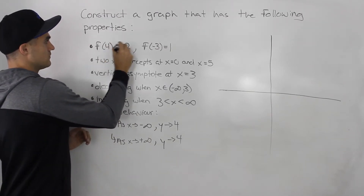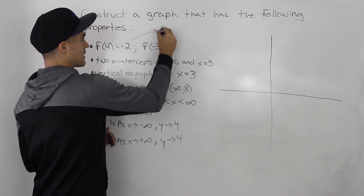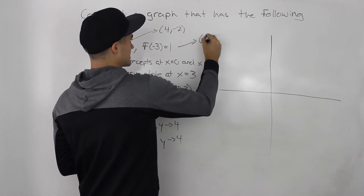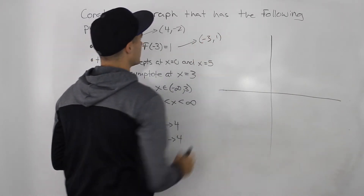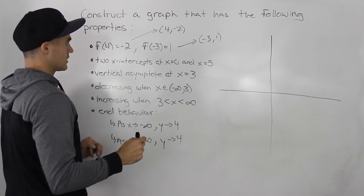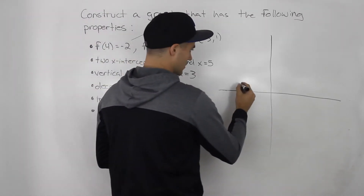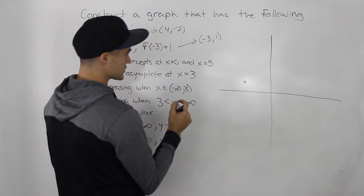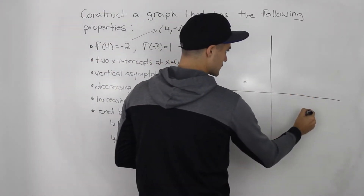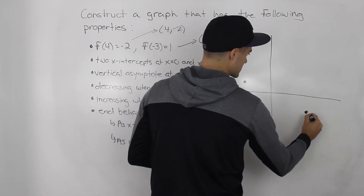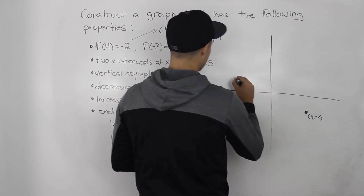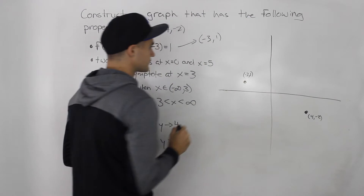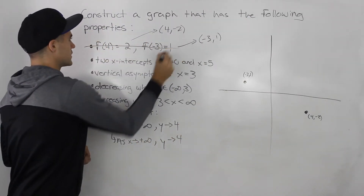We're given f(4) equals negative 2, which is the same point as (4, -2). And then we're given f(-3) equals 1, which is the same as (-3, 1). So let's label those. Negative 3 and 1 would be here, and then 4 and negative 2 would be here. So this is (4, -2) and this is (-3, 1). We're done with those.